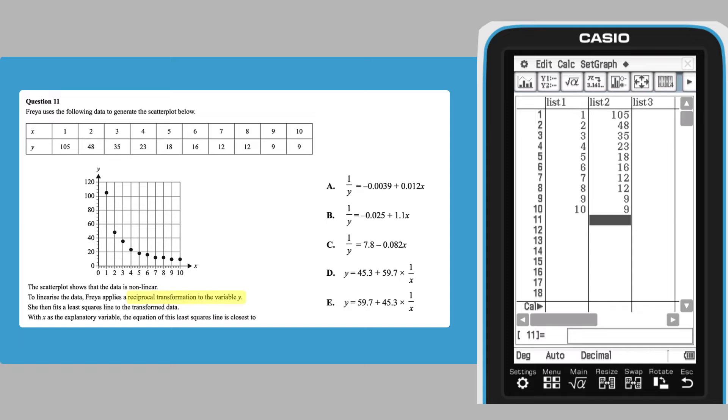In this question, a reciprocal transformation 1 over Y is called for prior to calculating the least squares regression line. To perform this transformation and store the results in list 3,